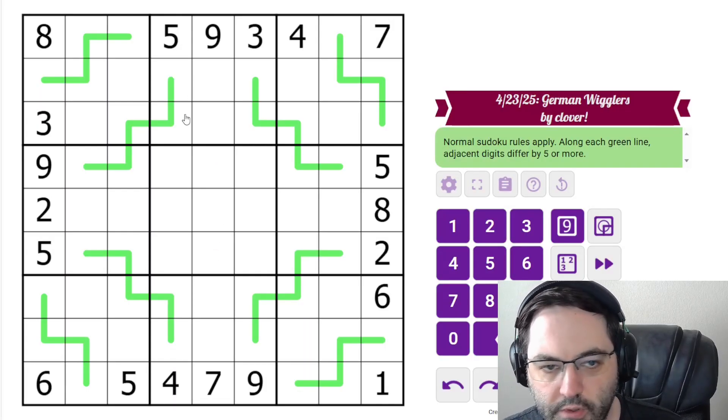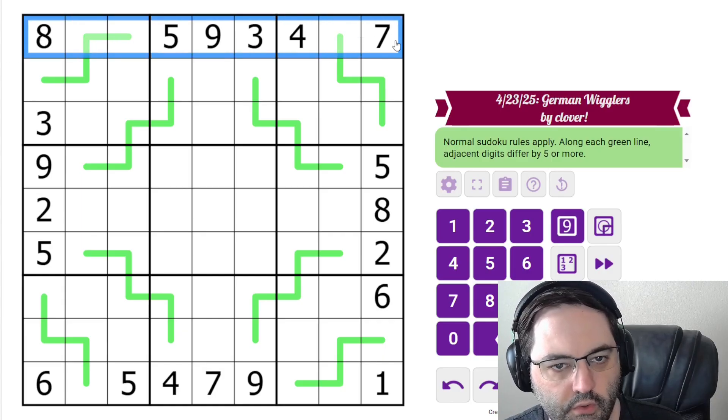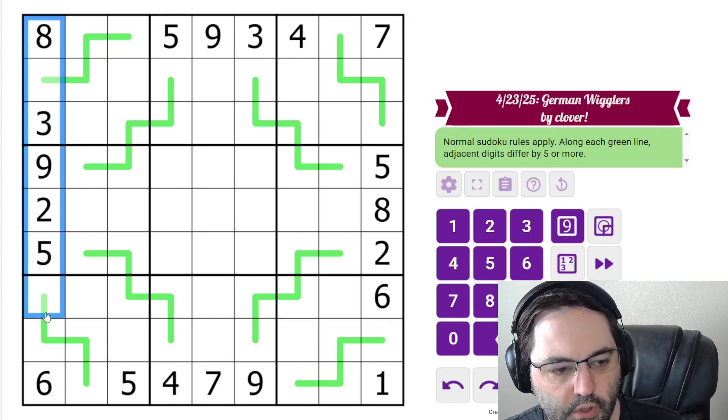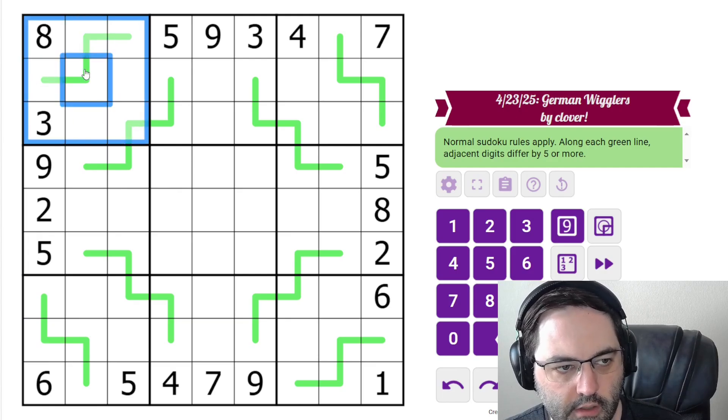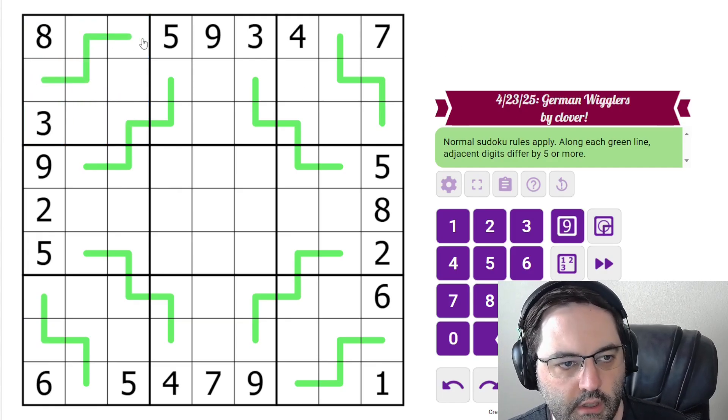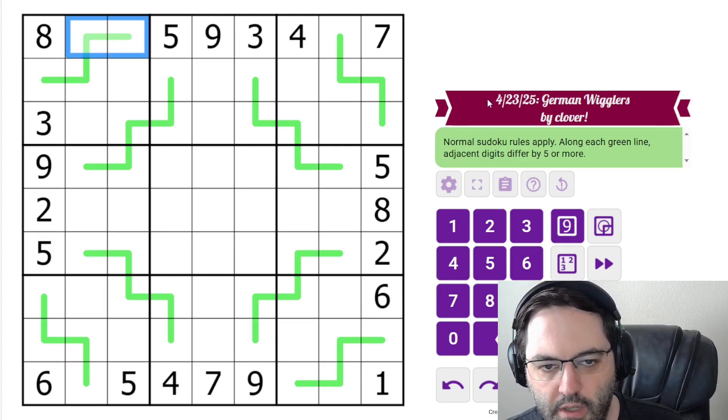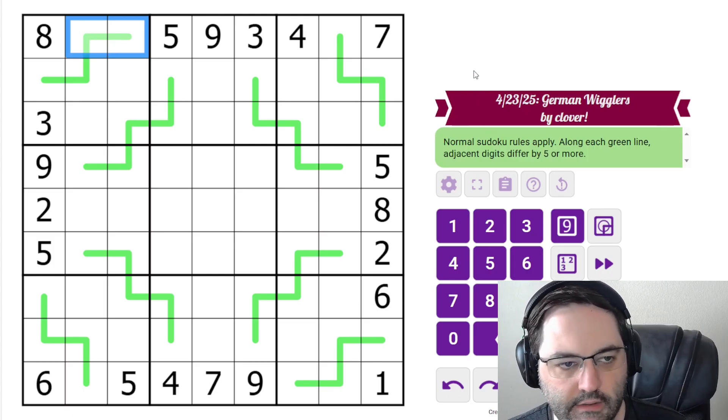This is a German Whispers puzzle, as you might guess from the title. We have normal Sudoku rules, 1 to 9 in each row, column, and 3x3 box. Additionally, we have some lines in the grid, and digits connected by one of these lines must differ by at least 5.